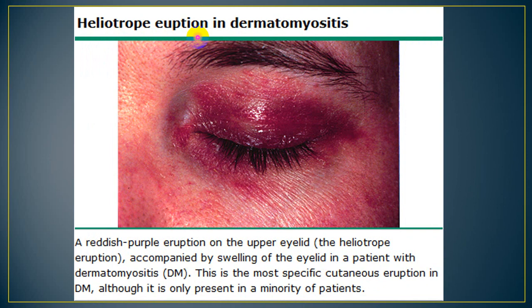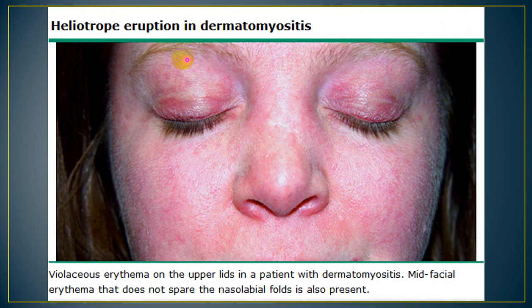Next is heliotrope rash or eruption. It is a violaceous discoloration of the eyelids, violaceous red or pinkish in color, associated with edema of the periorbital structures and eyelid. This involves the upper lid and is violaceous pinkish in color.